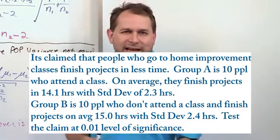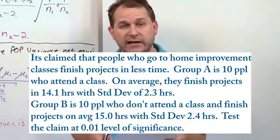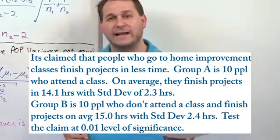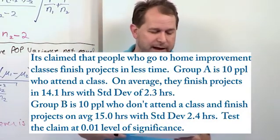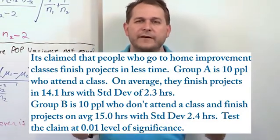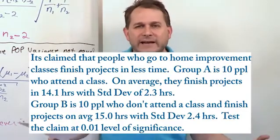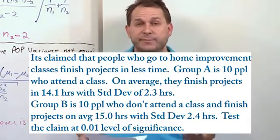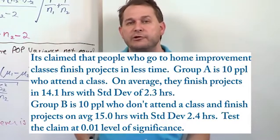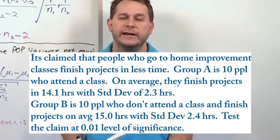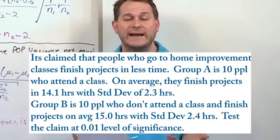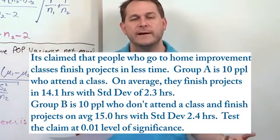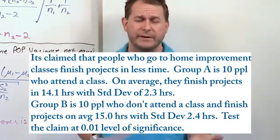And so we want to test this claim at a 0.01 level of significance. That's a very high level of confidence. 99% level of confidence corresponds to that. So again, we have a hypothesis that's easy for anyone to get behind. It makes sense that if you go take a class, on average you should be more skilled so when you get home you should be able to tackle your project and do it in a smaller amount of time. That would be a great advertising point for a home improvement store to be able to advertise.